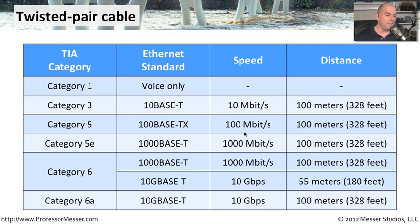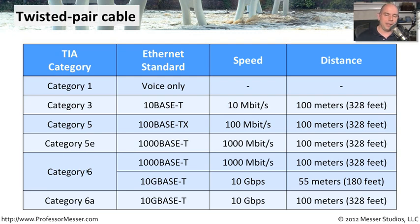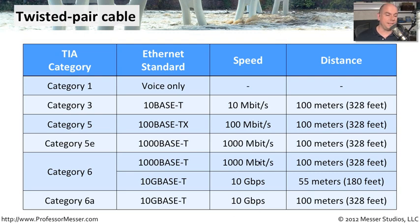With category 5e, when we wanted gigabit connectivity over copper — 1000Base-T — the distance was again 100 meters. With category 6, we could go up to 10-gigabit ethernet with 10GBase-T. We could also run 1000Base-T over category 6. But for 10 gigabits per second, notice we could only go 55 meters — less than normal. If using category 6 for gigabit connectivity, we could still go 100 meters; we just had a decreased distance when running 10 gig ethernet over that copper twisted pair cabling.